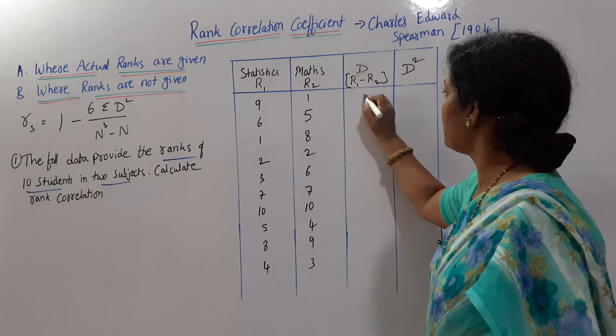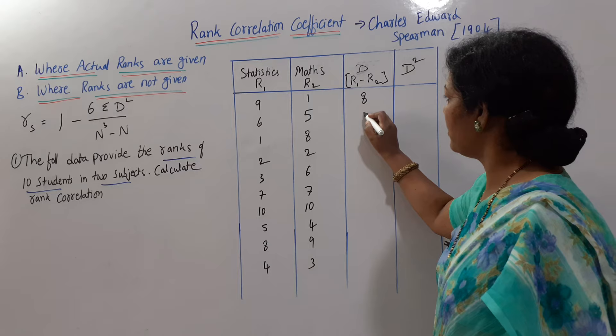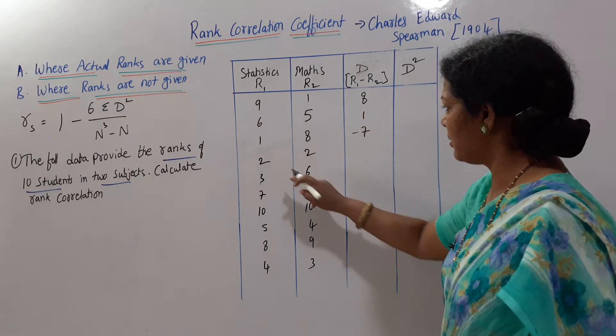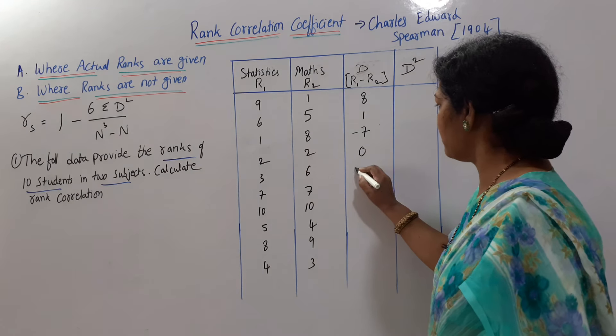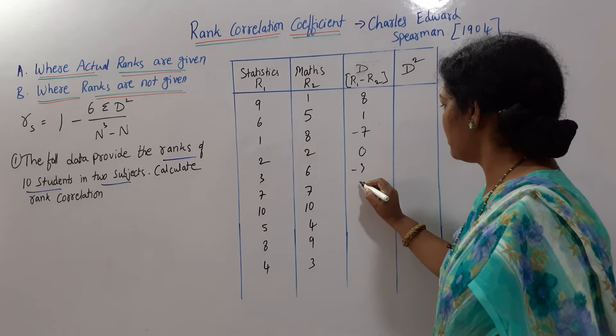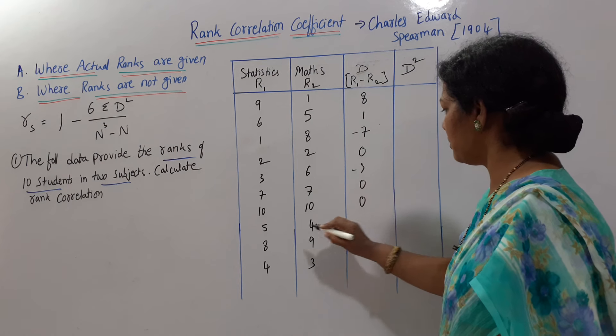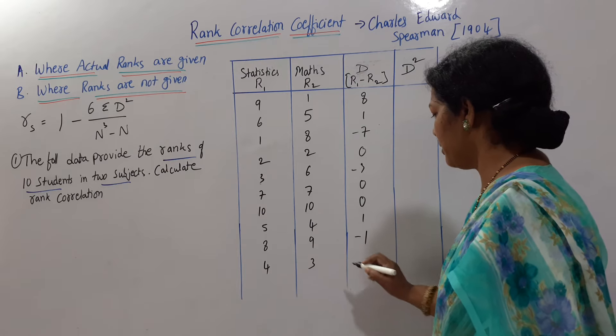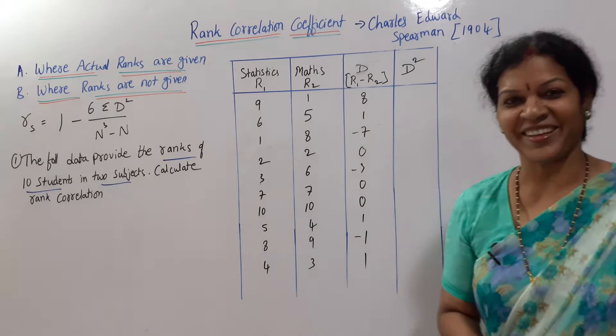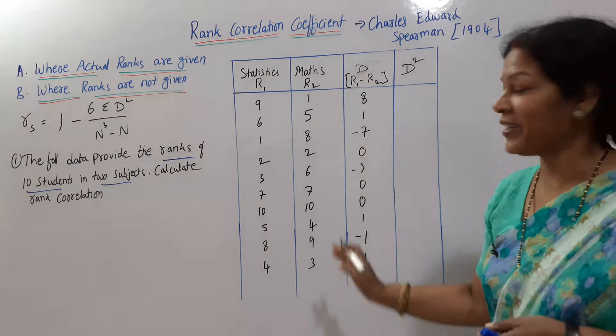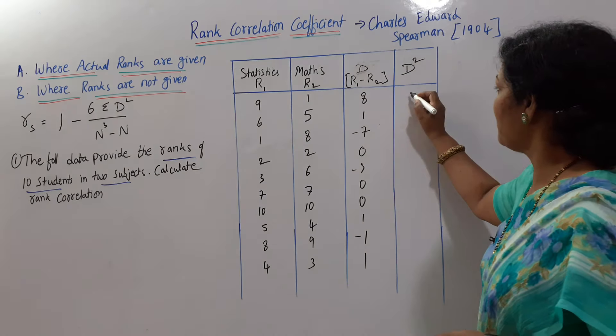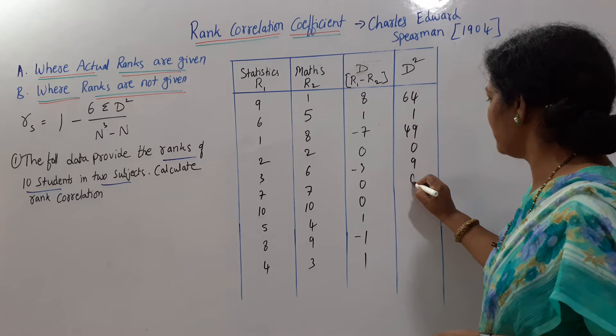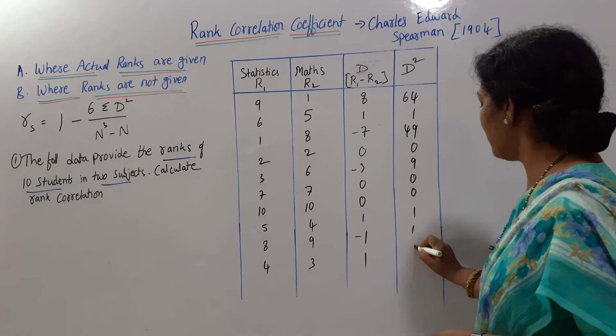Shall we do the calculations? Nine minus one, eight. Six minus five, one. One minus seven, minus seven. One minus eight, minus seven. Two minus two, zero. Three minus six, minus three. Seven minus seven, zero. Ten minus ten, zero. Five minus four, one. Eight minus nine, minus one. Four minus three, one. Quite easy calculations. Now D square, we will square this. Eight squared, 64. One, 49, 49, zero, nine, zero, zero, one, one, one.